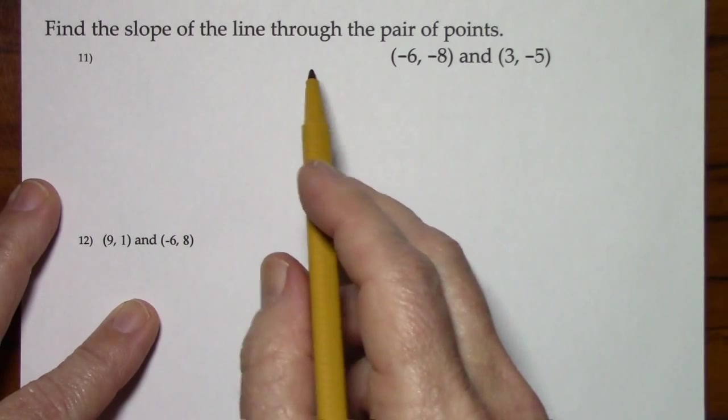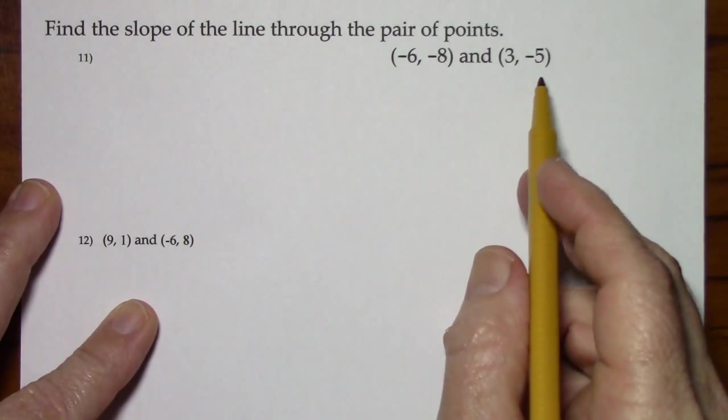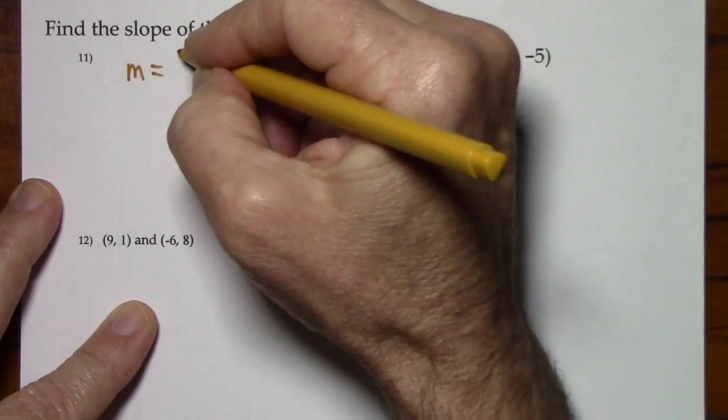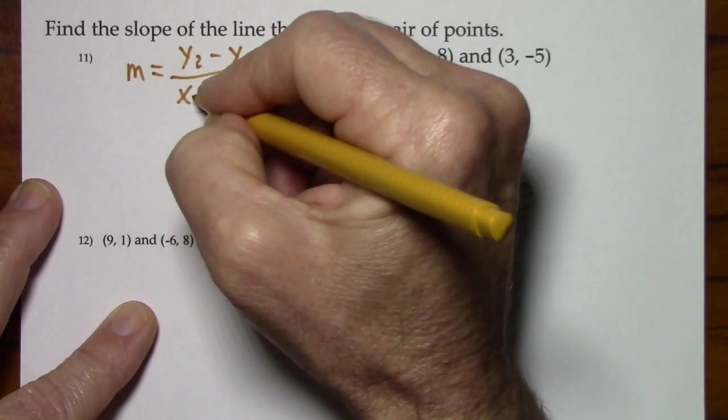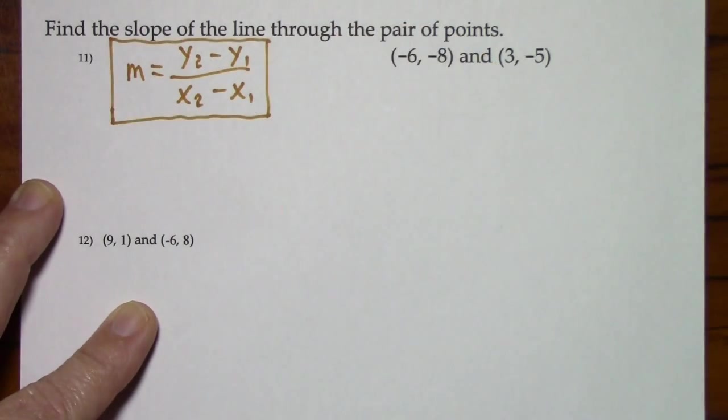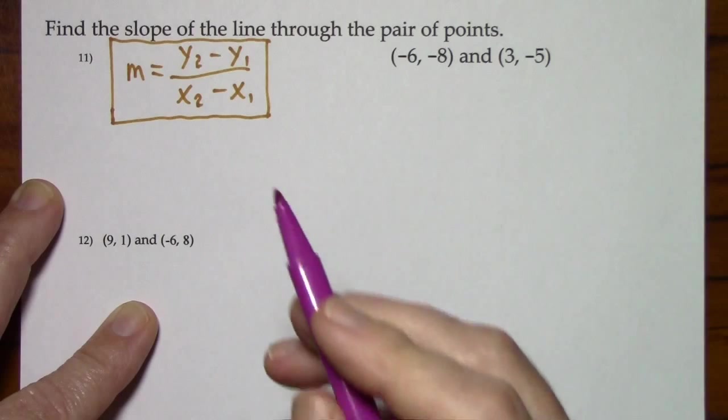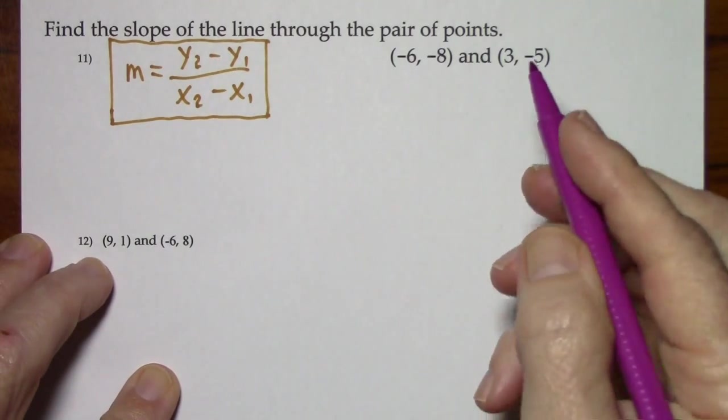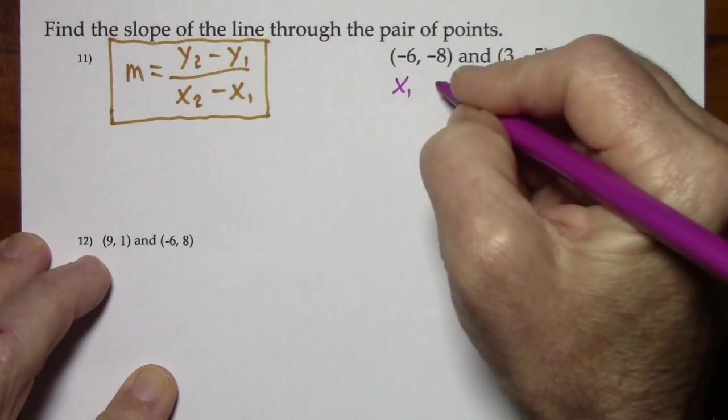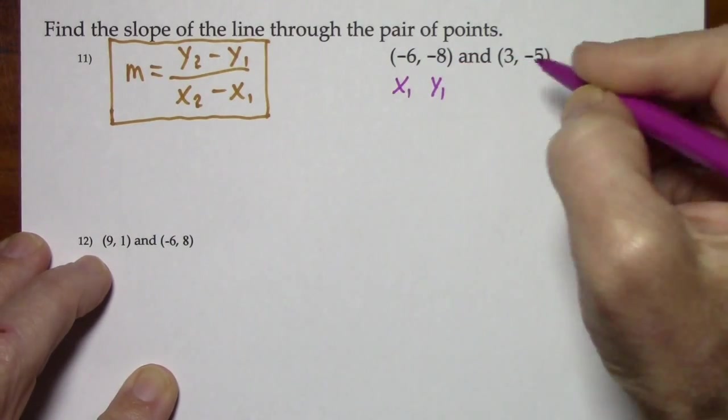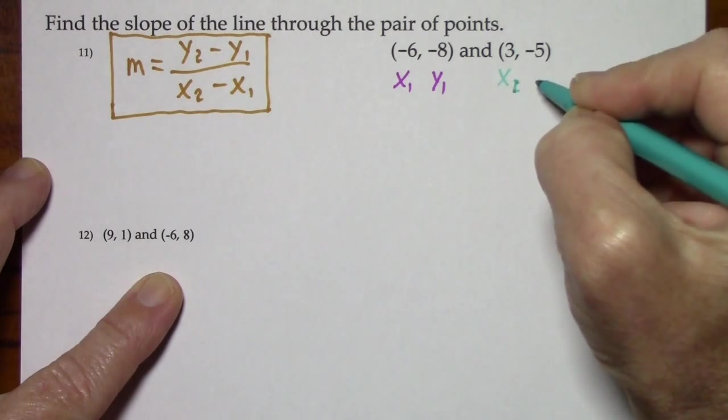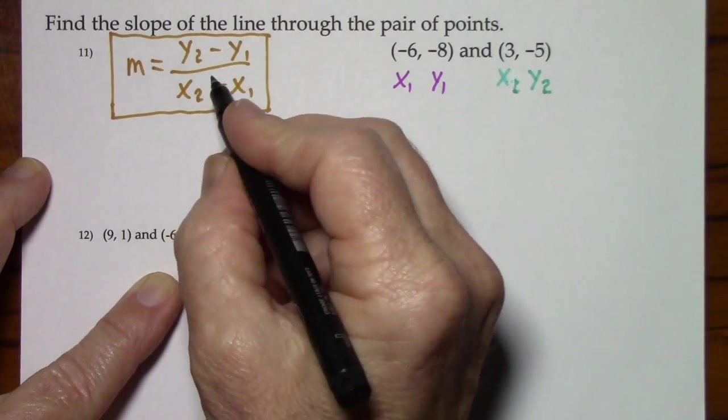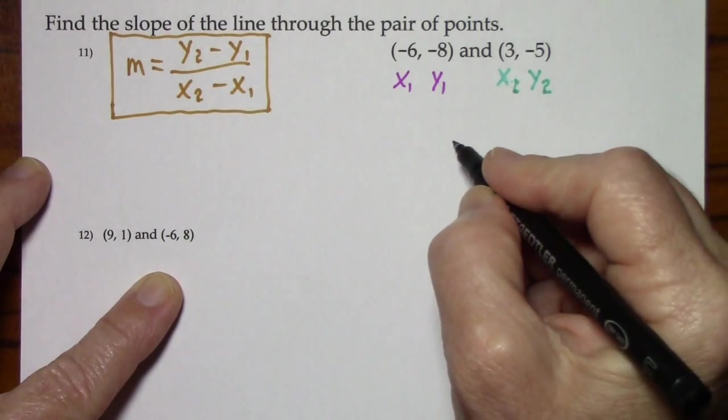Here we're to find the slope of the line. We're given 2 points. We'll need the formula for slope. Whenever I use this formula, I like to label these values. So here's x sub 1, and y sub 1, and x sub 2, and y sub 2. So I'll start with just the fraction bar and the two minuses.